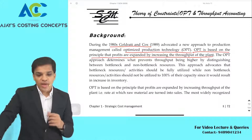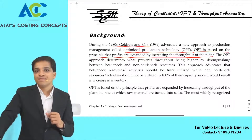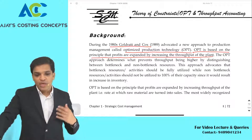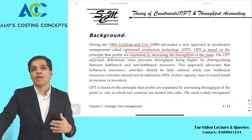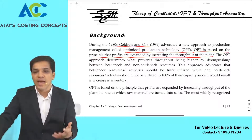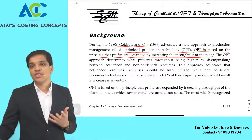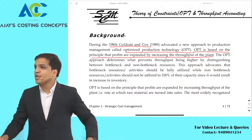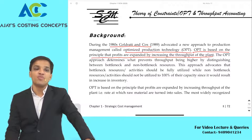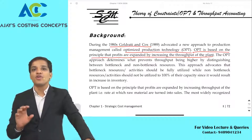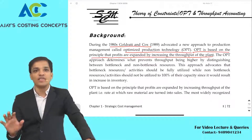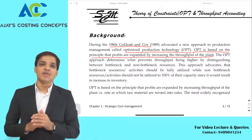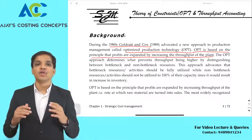Different products give different kinds of contributions. When implementing machine hours, you may feel one product gives more profit, so production should be prioritized for that product. That is what you learned in IPCC — calculate sales minus variable cost to get contribution per unit, and whichever product gives the highest contribution, prioritize that production.